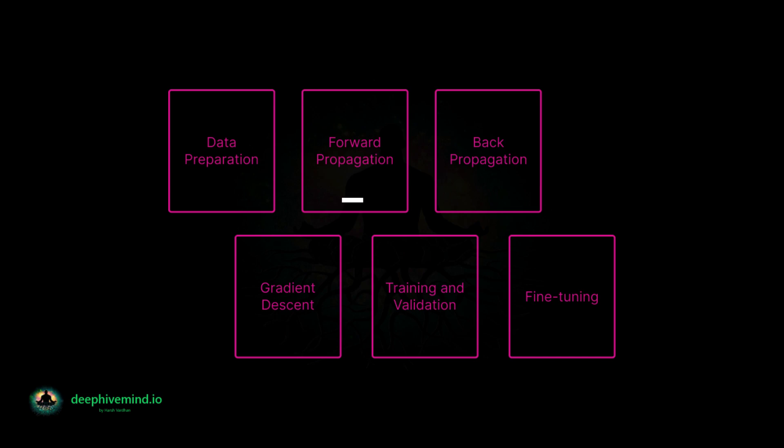Forward Propagation: once the data is prepared, the CNN uses the input data to make predictions about the labels. This process is called forward propagation, during which the input data is passed through the layers of the network, and the output of each layer is used as input for the next layer. Back Propagation: after the predictions are made, the error between the predictions and the actual labels is calculated. This error is then used to adjust the weights and biases of the neurons in the network, using a technique called back propagation.